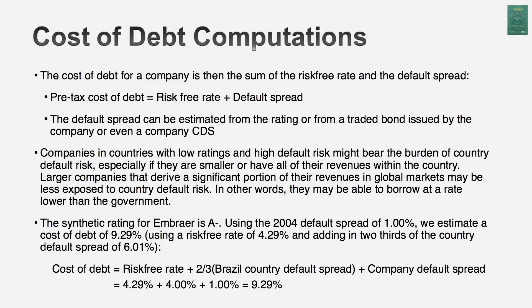I'm almost home. To get a cost of debt for Embraer, I have a risk-free rate — since I'm doing everything in U.S. dollars, that will be a U.S. dollar risk-free rate — and I have the default spread for Embraer. Normally I would just add those two and call that the cost of debt, but here's the one thing I'd be missing: Embraer is a Brazilian company. When investors buy bonds in Brazilian companies, they face two types of default risk — the default risk of the company and the default risk of the country in which the company operates.